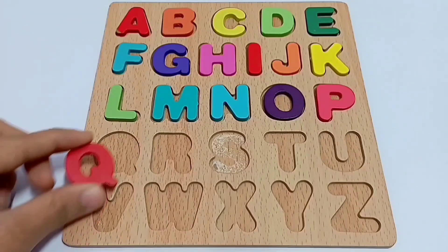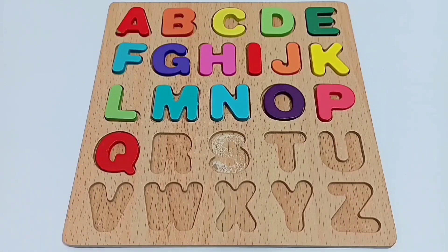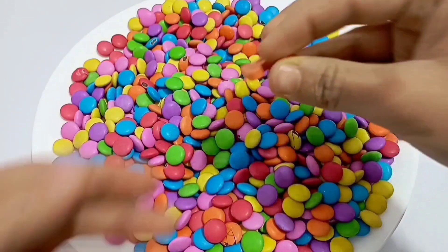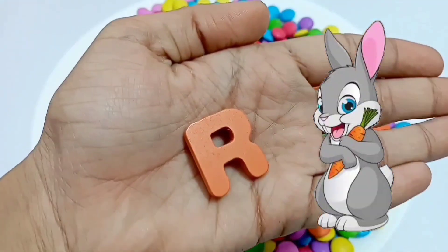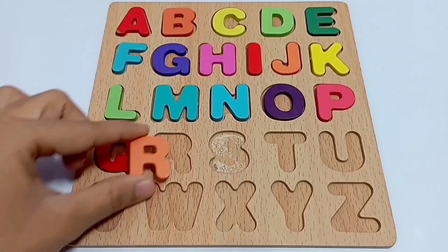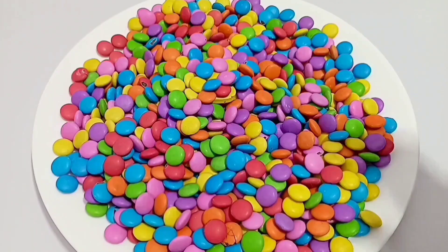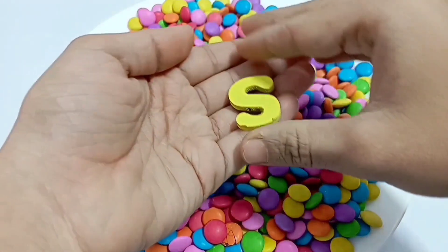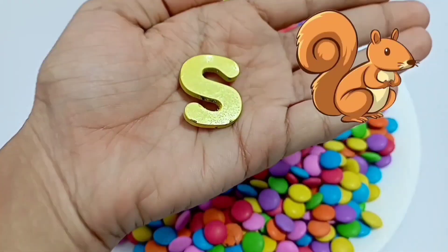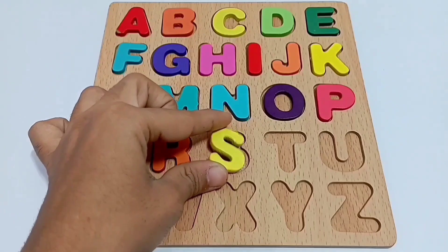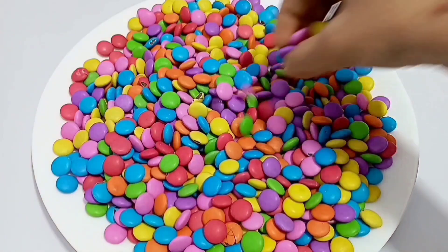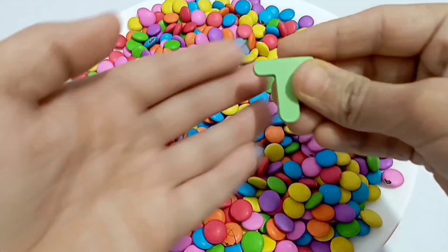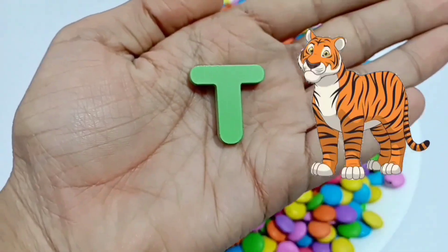Q for queen. R for rabbit. S for squirrel. T for tiger.